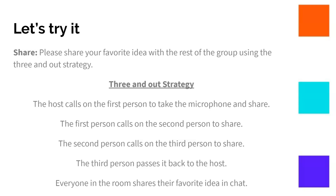Now it's time to share your favorite idea with the rest of the group using the three and out strategy. This is my favorite strategy — people always say to me, 'Brandi, I know that I'm going to be called on in your sessions, and you're going to keep me on my toes, and it's always going to be engaging,' and that's because I use this strategy. The host will call on the first person to take the microphone and share — that might be Phil. Phil will share his ideas and then call on the second person, Clint. Clint will share his ideas and throw it to Christy, who will share her ideas. Once Christy's done, she passes the microphone back to the host. Once those three people have shared, the host asks everyone in the room to share their favorite idea in chat. All right, three, two, one — share. Please pause the video.